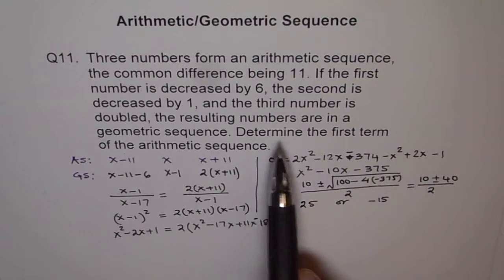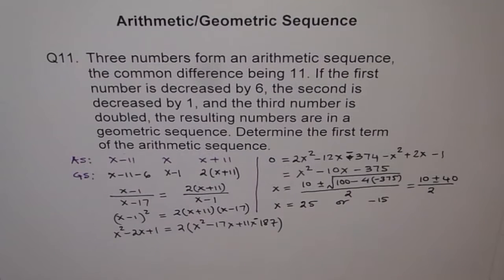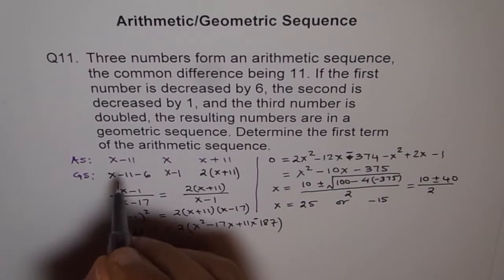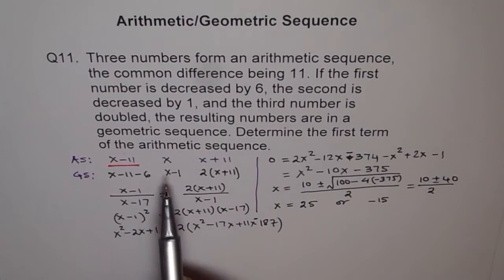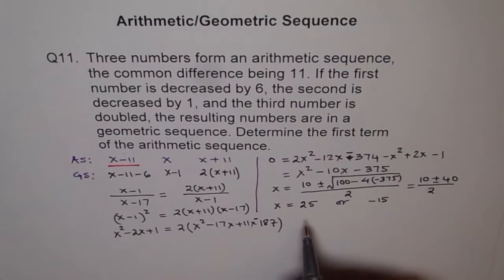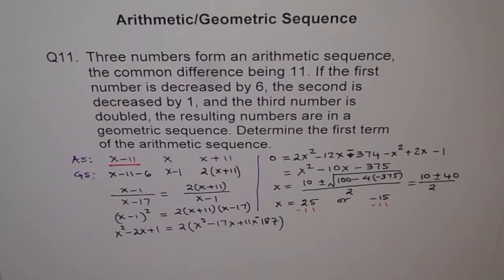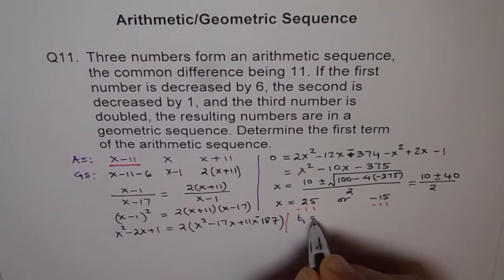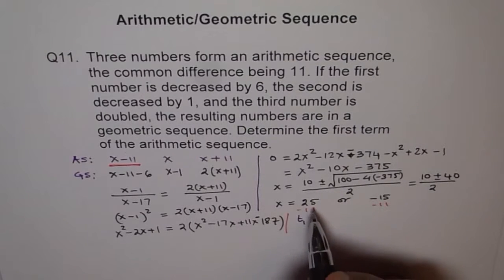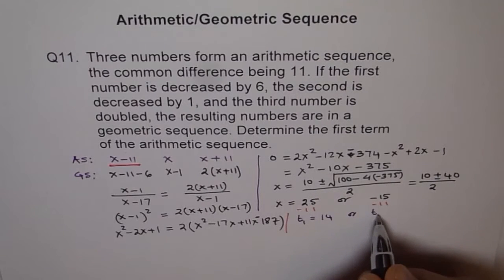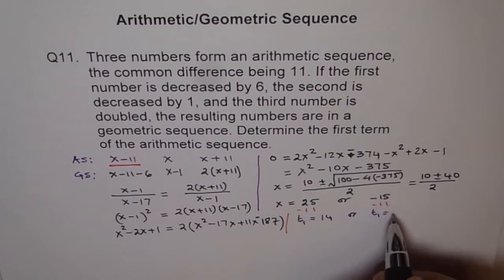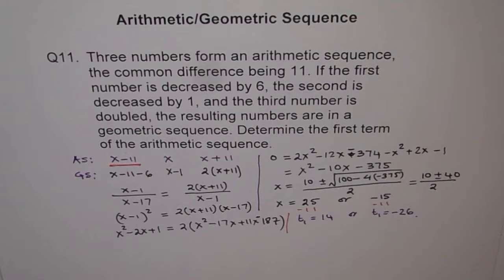But we need to find what? Determine the first term of the arithmetic sequence. Now, which is the first term of our arithmetic sequence? The first term is x minus 11, right? x was our center term, second term, right? Therefore, the combination is x is this. If we do minus 11 here and minus 11 here, we get our first term, right? The first term for us will be, so let me write this here, T1 is equals to 25 minus 11 which is 14 or T1 equals to minus 15 minus 11 as minus 26. So that is our solution to this problem.